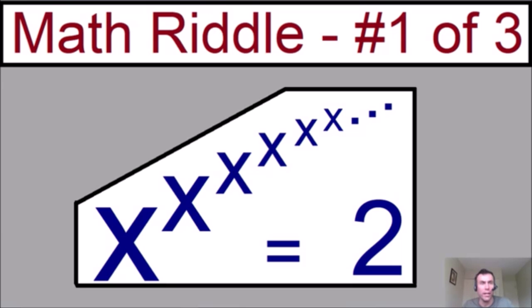Let's get started right away and start with riddle number one. Here we have a never-ending exponent. Notice how we have an x at the bottom, and on top of this x, we have an exponent of x. And on top of that exponent of x, we have another exponent of x. And on top of this, we have another exponent, and another exponent, and another exponent. This goes on forever and ever. This is a never-ending exponential equation.